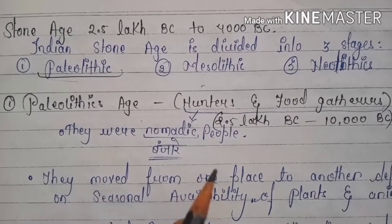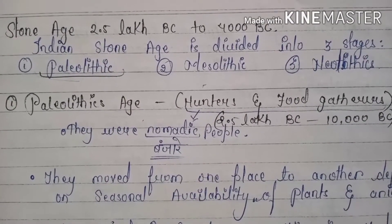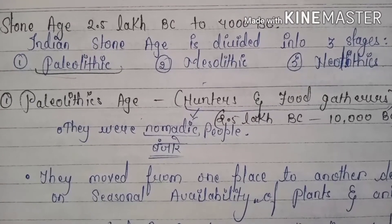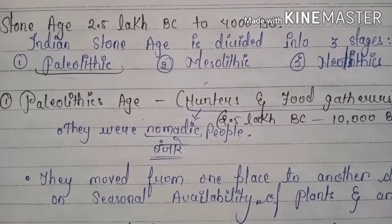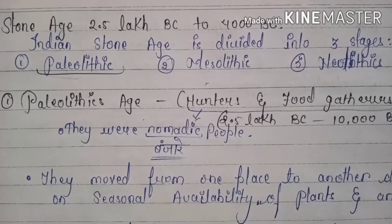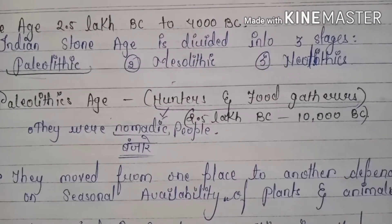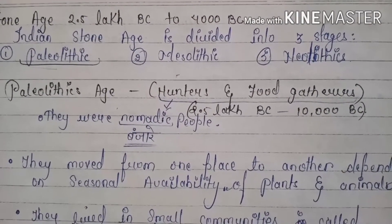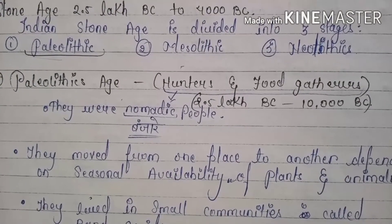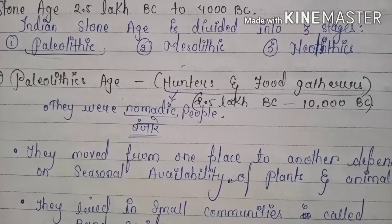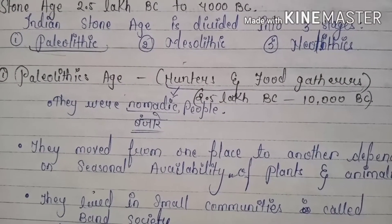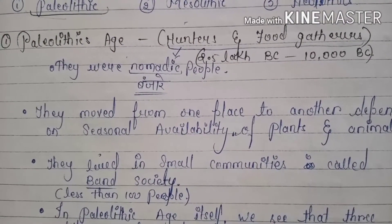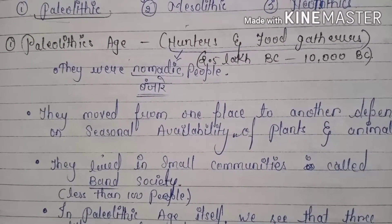People were nomadic — they moved from one place to another depending on seasonal availability of plants and animals. This was a small community where they were living, moving from one place to another in society.